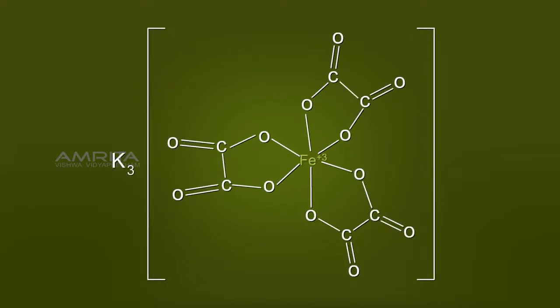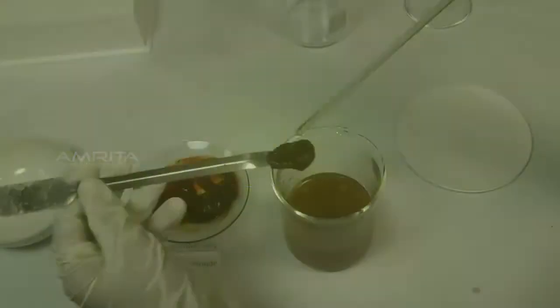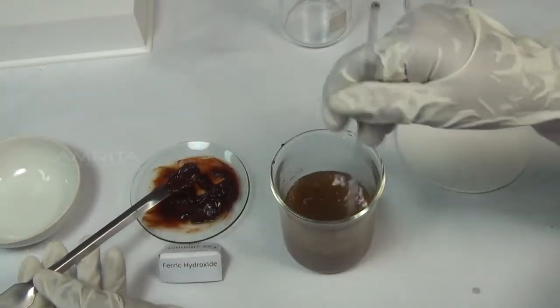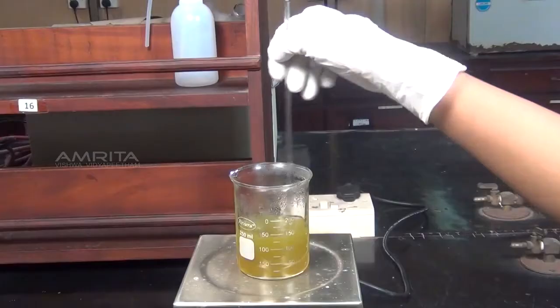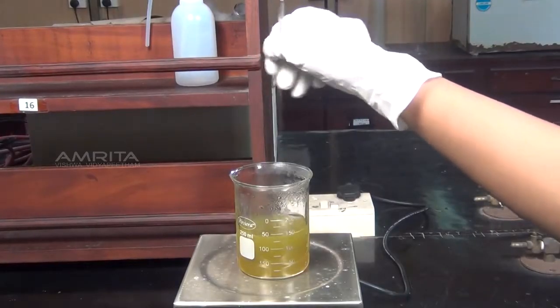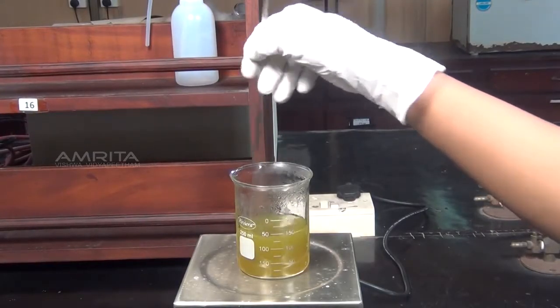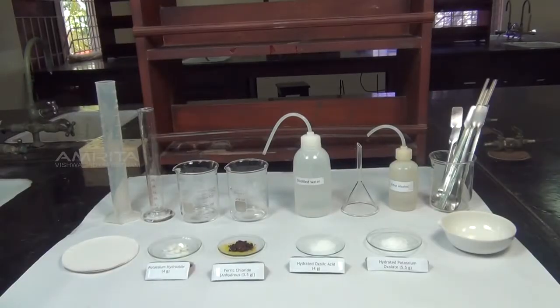The central iron atom is in the +3 oxidation state. This complex can be prepared by dissolving freshly prepared ferric hydroxide in a solution of potassium oxalate and oxalic acid. Our aim here is to prepare a pure sample of potassium trioxalatoferrate-3.